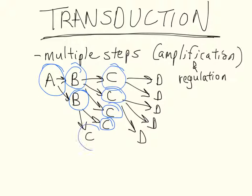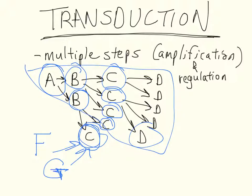Because you have so many steps, you can have different interactions. For example, you can have another pathway that maybe produces even more molecule Cs, or you can have molecule G that converts C into another form that is unable to activate D in the initial pathway. This allows for the signal to be amplified and for additional regulation.